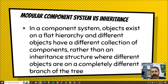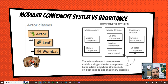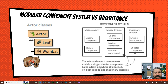Unity has a modular component system. In Greenfoot, we had inheritance — if we programmed stuff in Actor, then a Leaf and a Wombat could also do those methods. In Unity it's different. Say you have an enemy that moved but didn't shoot, an enemy that moved and shot, and an enemy that shot but didn't move. In Greenfoot you'd basically have to write separate code for each, but in Unity you write a script that teaches a character how to be an enemy and just drag it onto them.